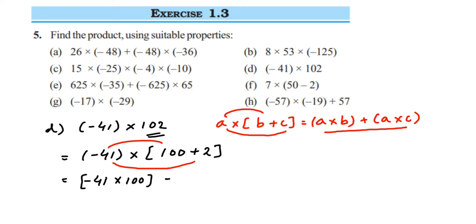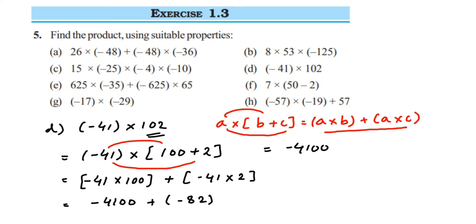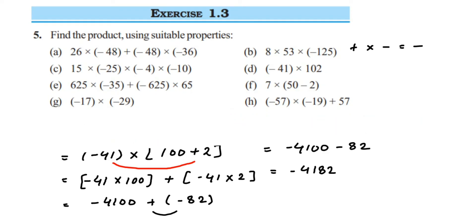Using the right side of the distributive property, a into b plus a into c: substituting a as minus 41, b as 100, c as 2. Opening brackets: minus 41 multiplied by 100 gives minus 4100, plus minus 41 multiplied by 2 gives minus 82. Both integers have the same negative sign so we add them: 4100 plus 82 gives 4182, and the answer is minus 4182.